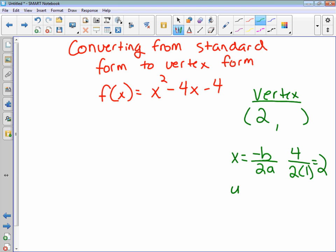To find the y value, I have to plug 2 back in everywhere that there is an x in the function. So plug in. So f of 2 is equal to 2 squared minus 4 times 2 minus 4. So f of 2 is equal to 4 minus 8 is negative 4, minus 4 is negative 8. That's the other half of your vertex.